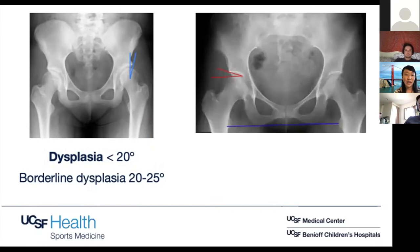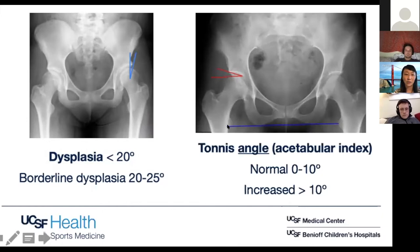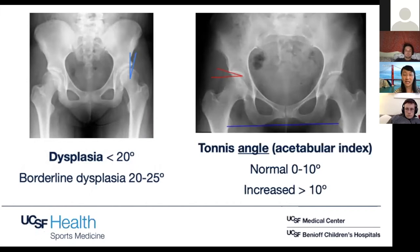If the lateral center edge angle is less than 25, I also measure the Tönnis angle, also known as the acetabular index. You draw a line normalizing the ischial tuberosity, then a line parallel to that to the inner portion of the sourcil, then a second line up across to the top of the sourcil — essentially measuring how much the acetabulum opens laterally. Normal is around 10 degrees or below; increased is greater than 10 degrees. This is the same measurement used in pediatrics when following kids with hip dysplasia.